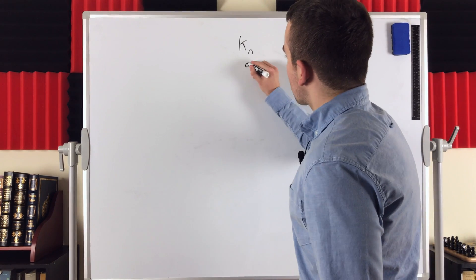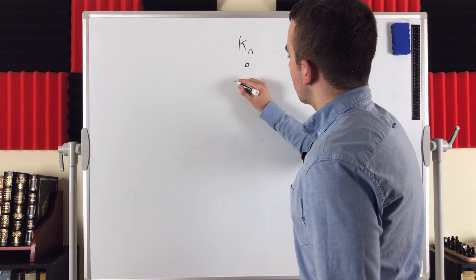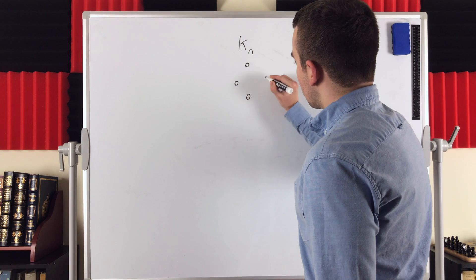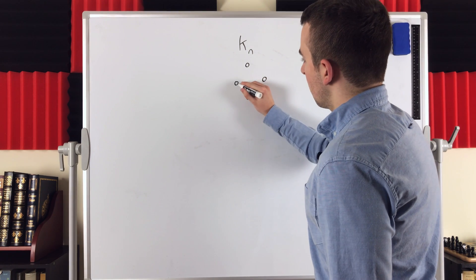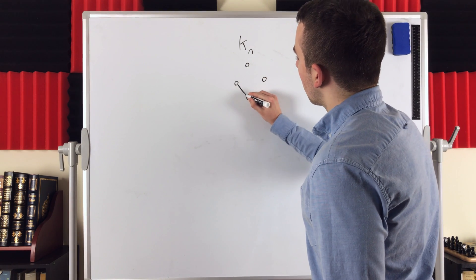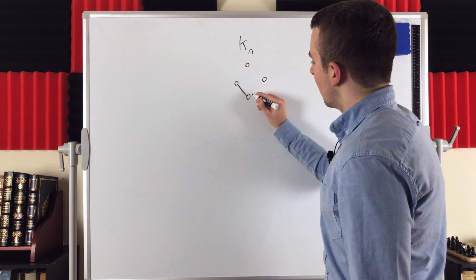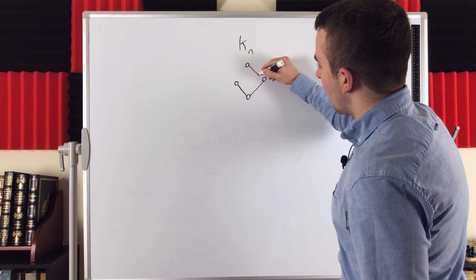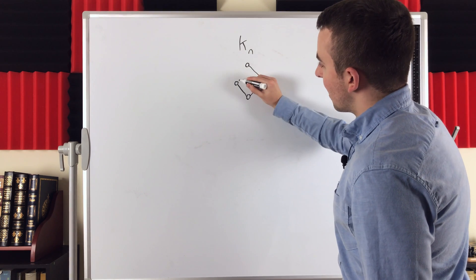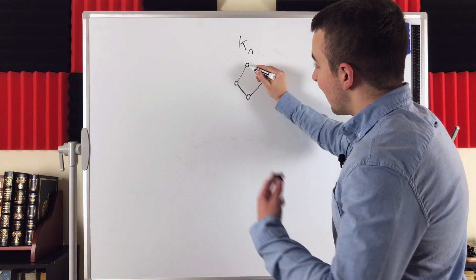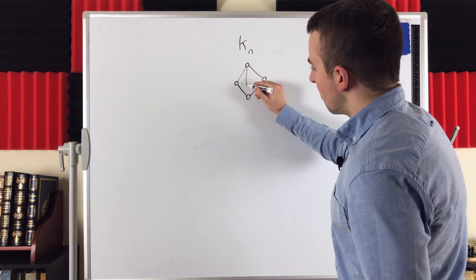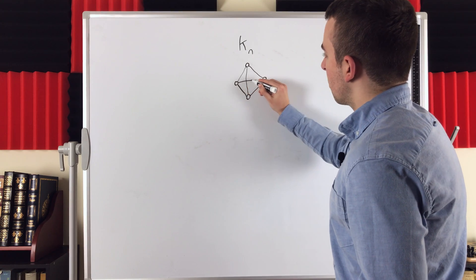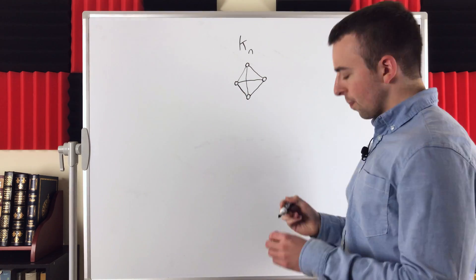Just a quick example: here's a complete graph on four vertices. We've got our four vertices, and then every pair of vertices is joined by an edge, and that's what makes it complete. It's complete because it's got every possible edge that it can have.